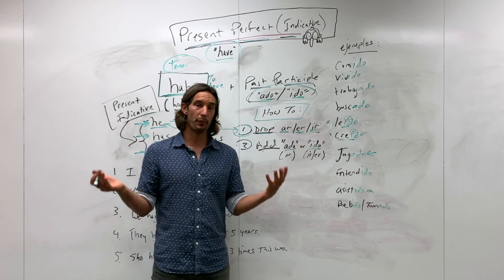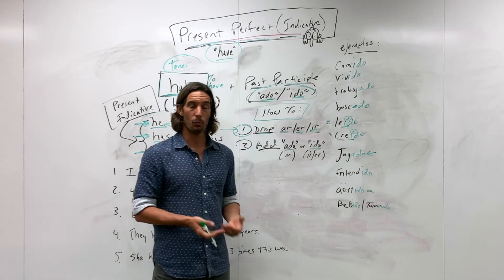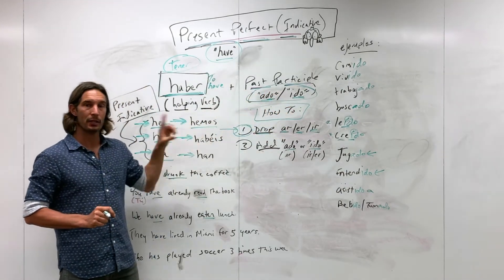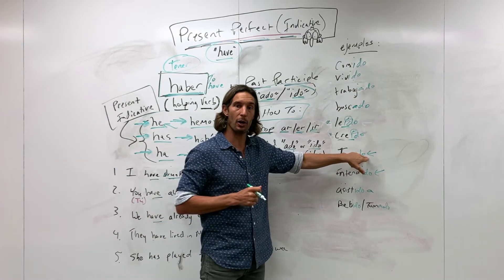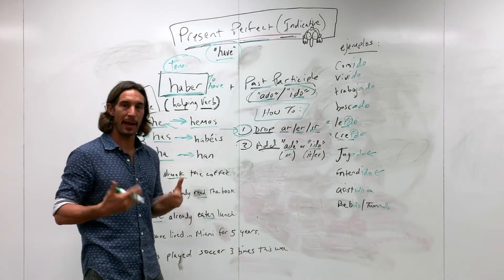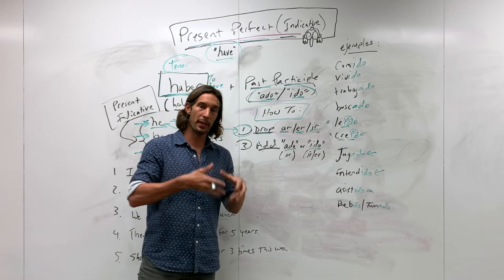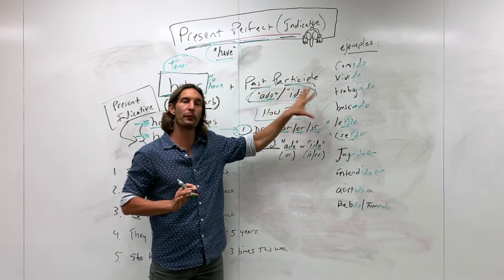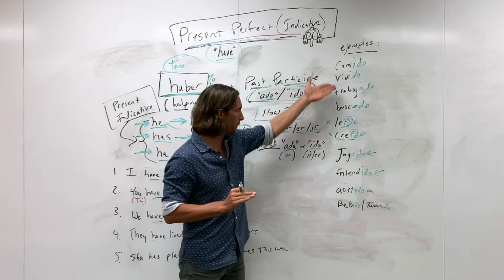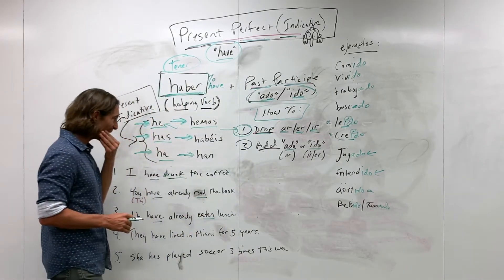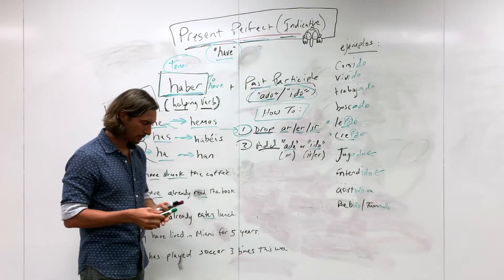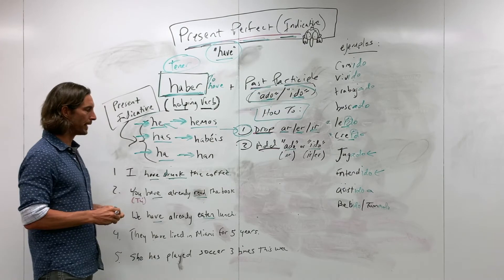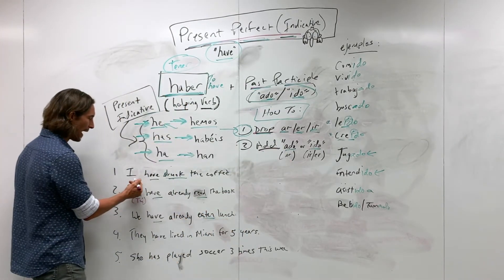No matter whether it's a whole group of females or one single male, when we use the past participle in a perfect tense, it doesn't change — it always stays the letter 'o.' There are ways of using a past participle with the verb 'estar' where you would make agreement in number and gender, but that's not what we're talking about today. In a perfect tense, the past participle always ends in 'o.'